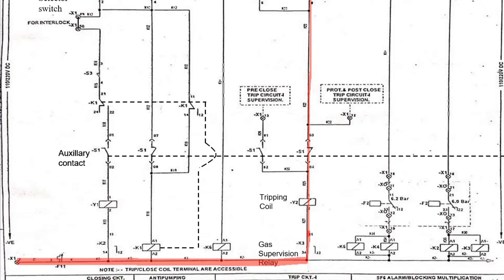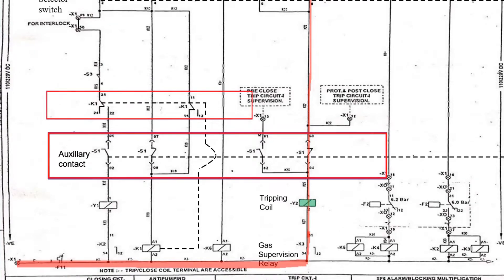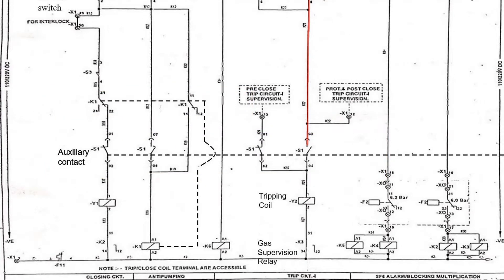Thus energizing the tripping coil, and as soon as the circuit breaker trips, its auxiliary contact along with K1 relay — which is the anti-pumping relay — will change its contact as shown here. So with this, it completes our tripping circuit in remote mode.